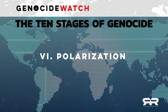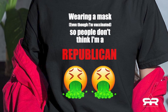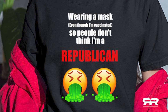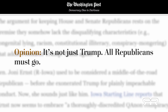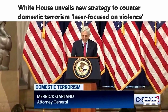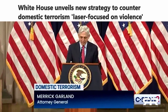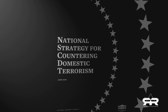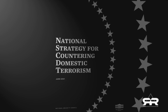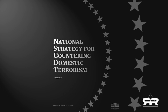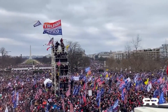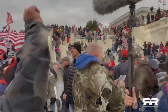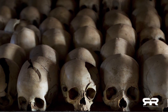Stage six: polarization. With the previous five stages in effect, the people are now ripe for complete polarization. Moderates are intimidated into silence, and it becomes accepted that the targeted group must go. The dominant group passes emergency laws granting them power over the targeted group, such as the national strategy for countering domestic terrorism. Now that the people have been conditioned to accept that patriotic Americans are domestic terrorists, the stage is set for genocide. This is where we definitely are today.